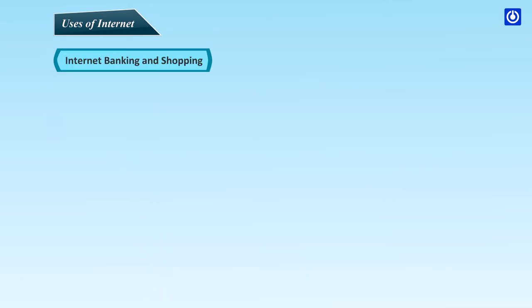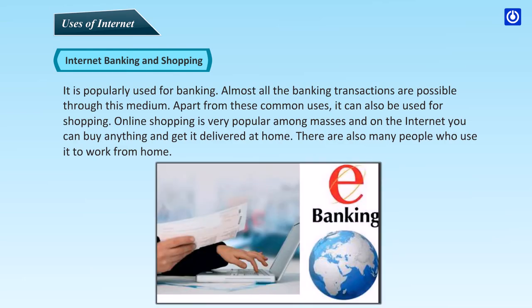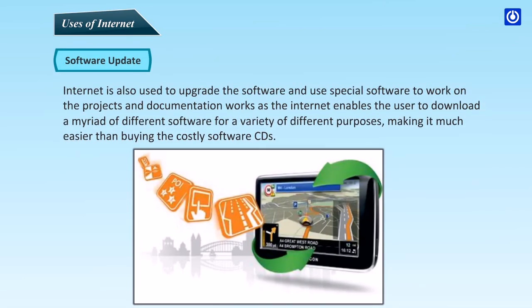Internet Banking and Shopping: The Internet is popularly used for banking, and almost all banking transactions are possible through this medium. It can also be used for shopping — online shopping is very popular among masses, and you can buy anything online and get it delivered at home. Many people also use it to work from home. Software Update: The Internet is also used to upgrade software and download a myriad of different software for a variety of purposes, making it easier than buying costly software CDs.